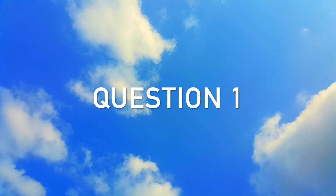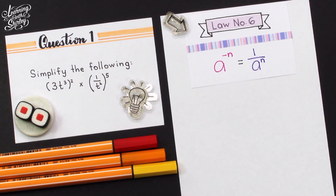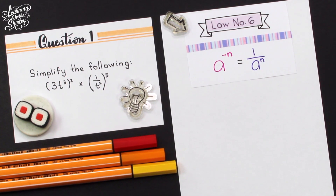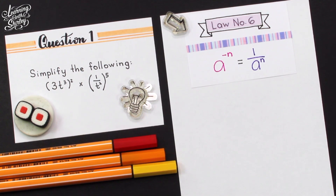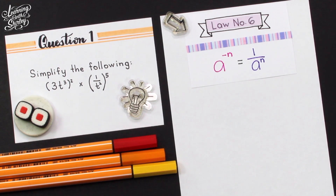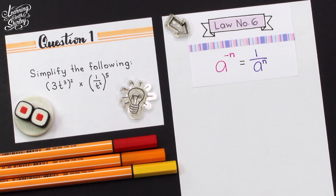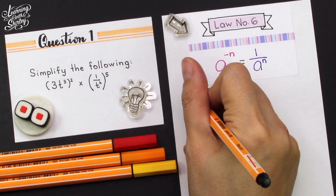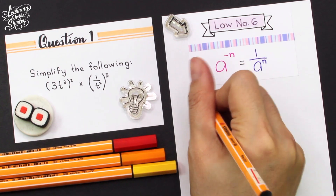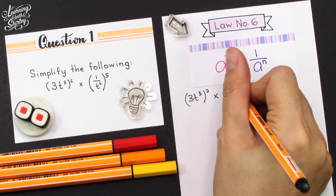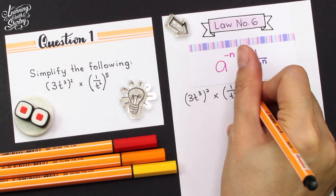Let's take a look at the first question. For question number one, simplify the following: 3t cubed holding to the power of 2, times 1 over t squared holding to the power of 5. So to solve this question, we're going to use law number 6 which is negative indices: a to the power of negative n equals 1 over a to the power of n. First of all, I'm going to write down the question given: 3t cubed holding square, times 1 over t squared holding to the power of 5.